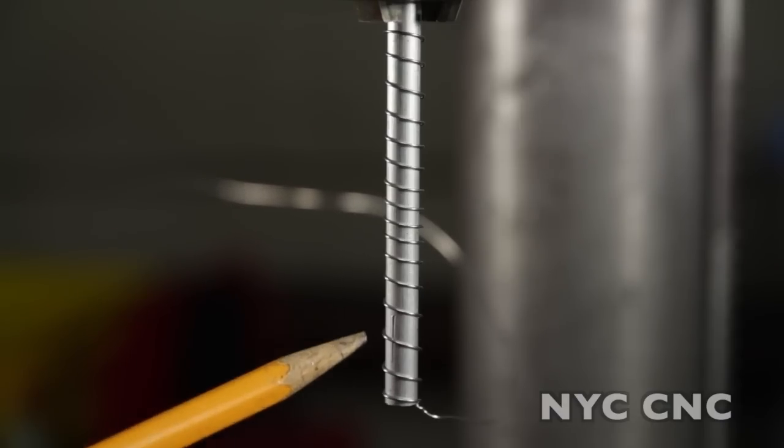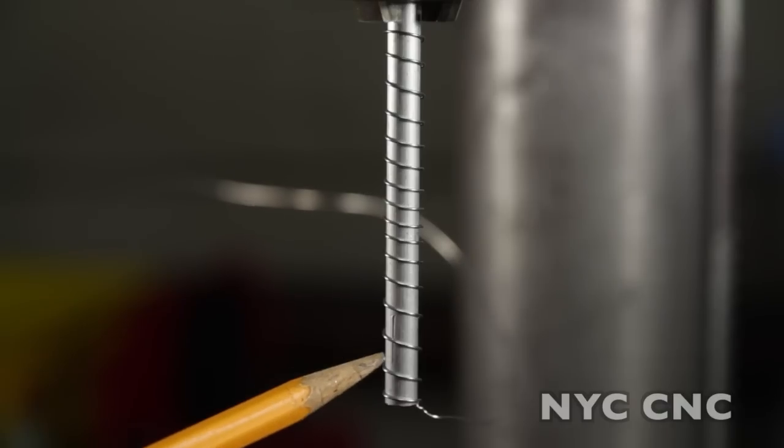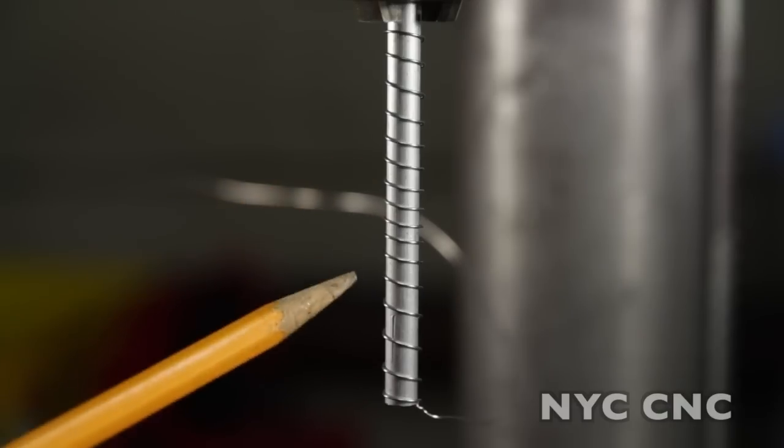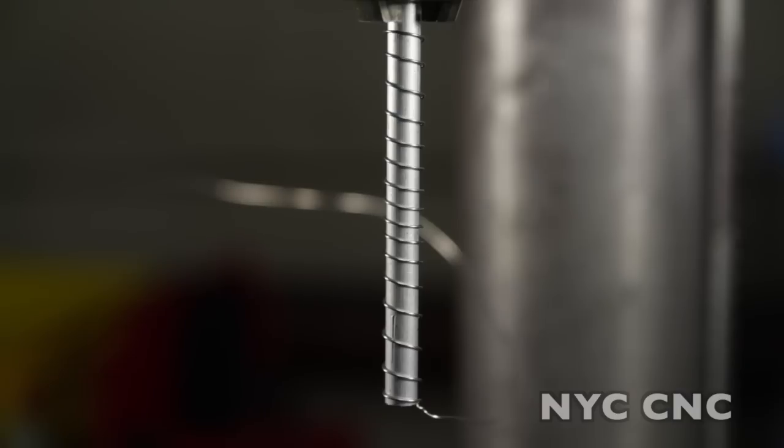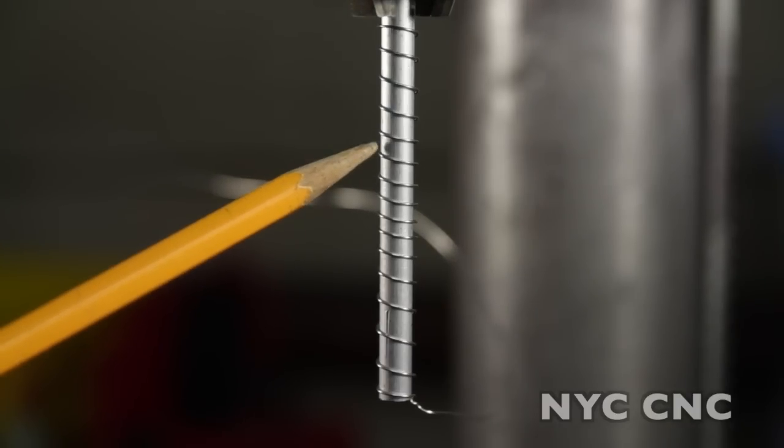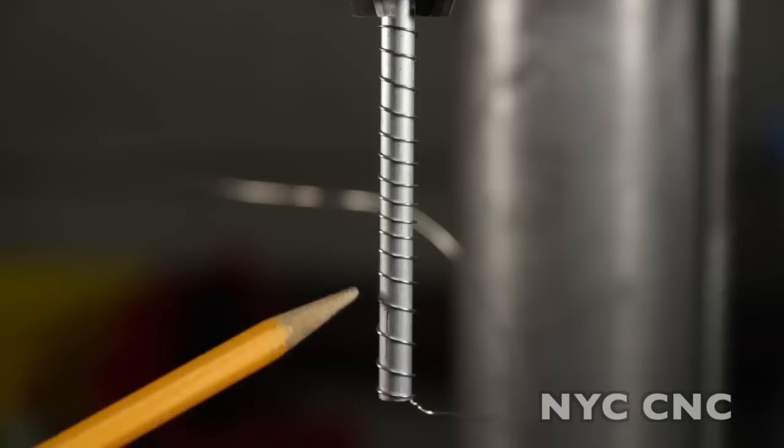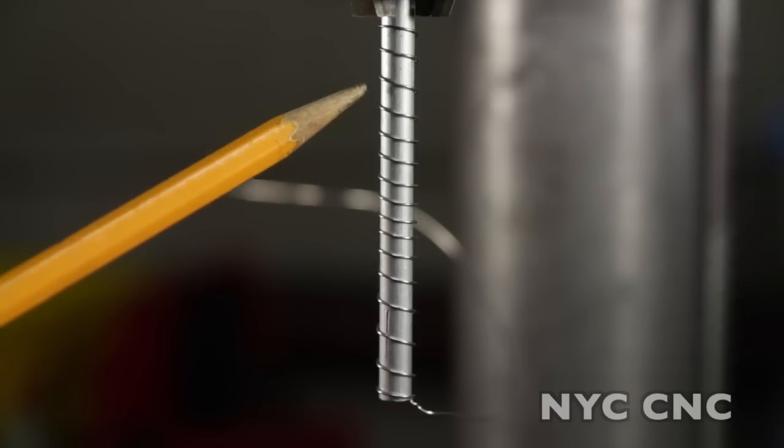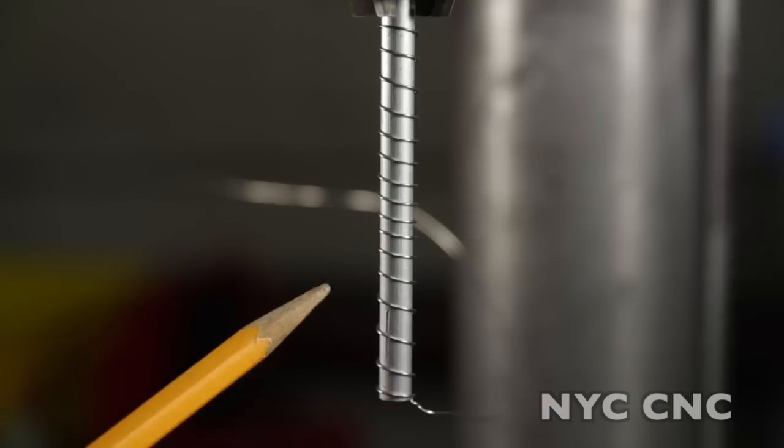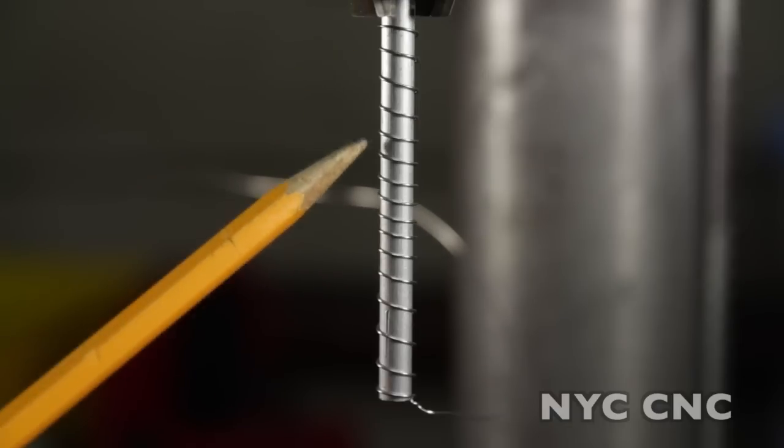I suggest you turn a much longer spring than you need. That way you can cut off the portion that is suited best for you. You want to use a mandrel that's slightly thinner than the diameter that you want because inevitably the spring will uncoil just a hair after it's turned on the mandrel, which will increase the spring's diameter.